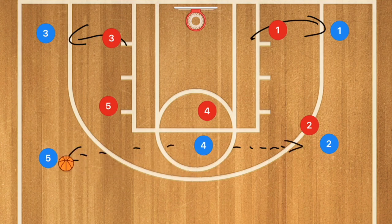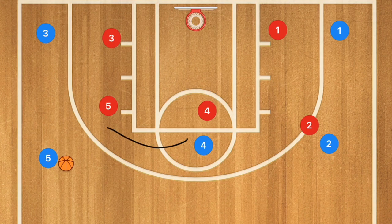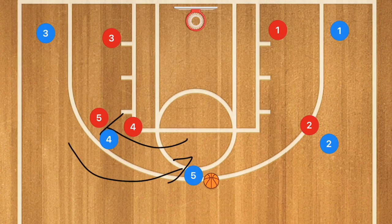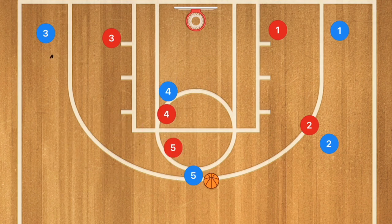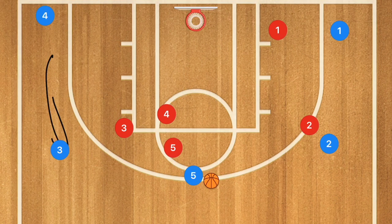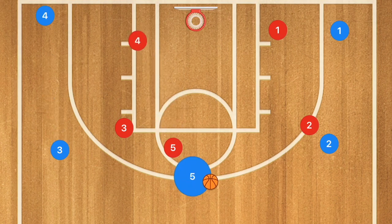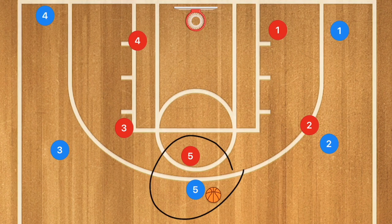If player 5 gets that ball, player 4 will then set a screen on player 5's defender. Player 5 will then use that screen. Player 4 will then roll to the basket. If this is open, he can pass to player 4 for a layup. And if that wasn't open, player 3 and player 4 will fill out and we're back into our 5-out offense with player 5 being at the point.